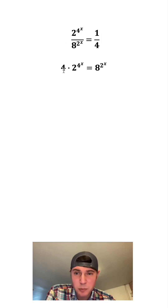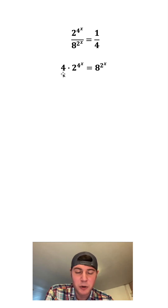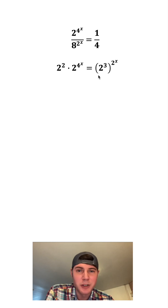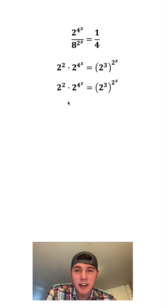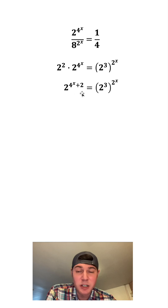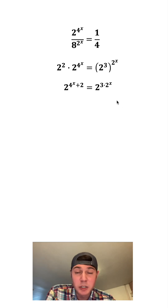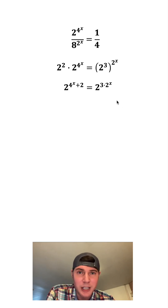Next, let's express all of these in terms of 2. So 4 can be expressed as 2 squared, and 8 can be expressed as 2 cubed. On the left-hand side, since the bases match, we can just add these exponents, which gives us 2 to the quantity 4 to the x plus 2. And on the right-hand side, these exponents can multiply, which gives us 2 to the quantity 3 times 2 to the x.